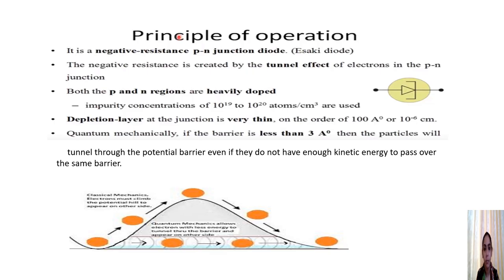The tunnel diode, also called the Esaki diode, works on the principle of negative resistance. This negative resistance is created by the tunneling effect of electrons in the P-N junction. In the construction, both the P and N regions are heavily doped, with impurity concentrations of 10¹⁹ to 10²⁰ atoms per centimeter cube, making the depletion layer very thin — on the order of 100 angstroms (10⁻⁶ cm).